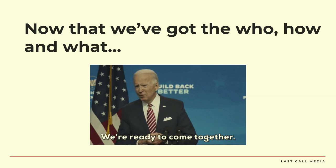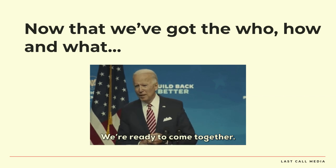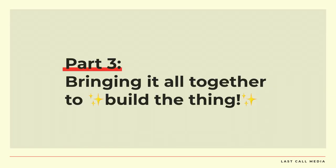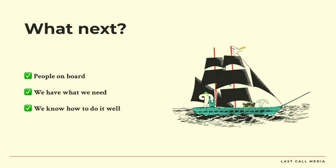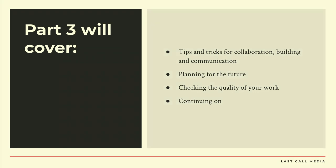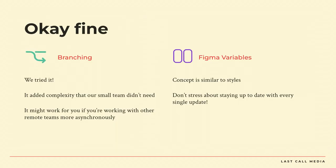So now what? We've got the who, the how, and the what — we're ready to come together. Let's bring it all together and build the thing. We've got our people on board, we have what we need, we know how to do it well. This part we're going to cover some tips and tricks for collaboration, building and communication, planning for the future, checking the quality of your work, and continuing on with your design system. We'll talk about some specific Figma stuff. Branching — we tried it. Great collaborative tool. It added some complexity that our small team didn't really need, but it might work for you if you're working more asynchronously or with a larger remote team.